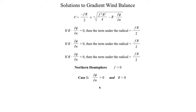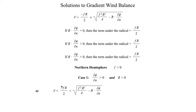Now, let's take a look at a combination where dφ/dn is positive and R, the radius of curvature, is also positive. Multiplying these two quantities together, I get a positive value, which means that the term under the radical is going to be smaller than F times R over 2. So that means the entire radical is going to be something smaller than F times R over 2. Remember from the quadratic equation there are two solutions: one with plus the square root, and one with minus the square root.